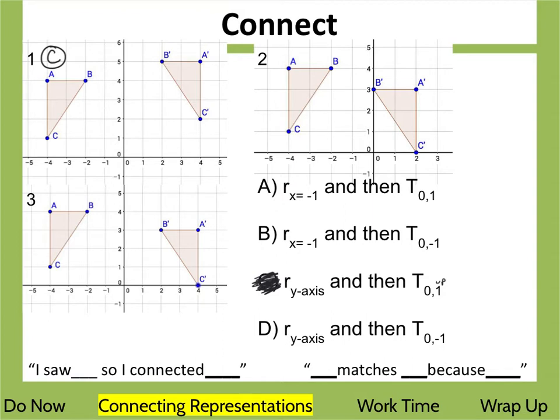There's only one choice left, it's got to be choice D for a reflection over the y-axis. But just to check, remember, this T subscript 0,-1 means that it goes down one unit. So let's just check, from A, B, C, we'd reflect it over here, B would be here, it goes down to get to B prime. So, perfect, that means that choice D is going to be three.